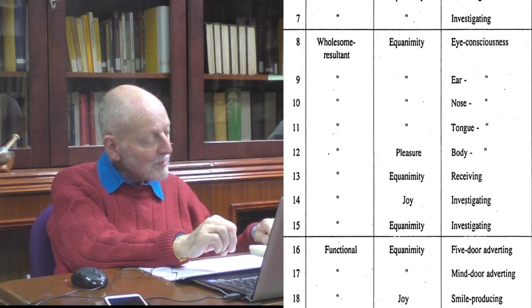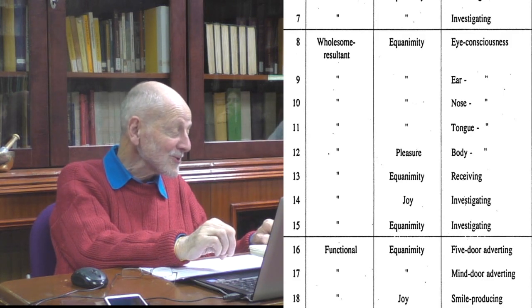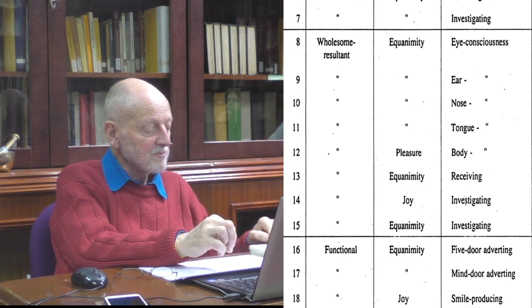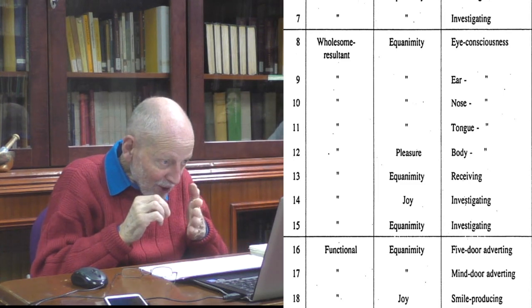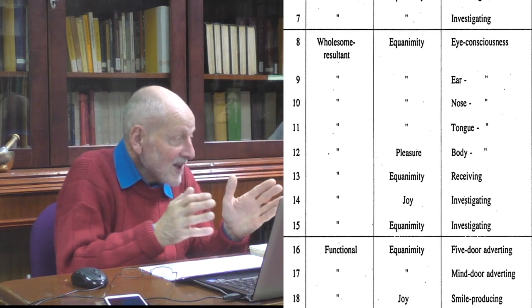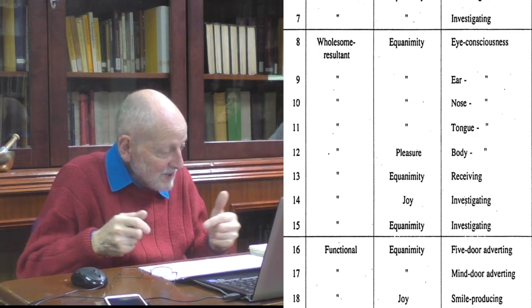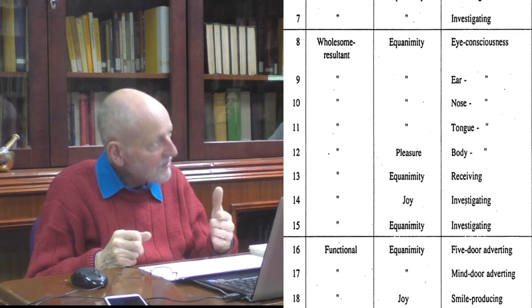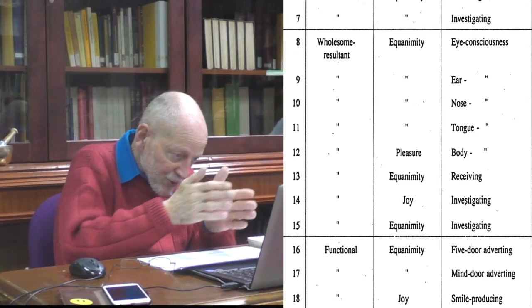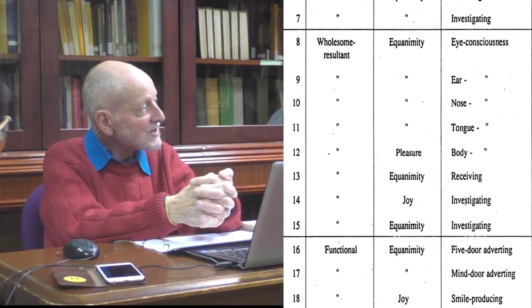All of the arahant's thoughts are kriya. From the time the Buddha became enlightened at the age of 35, he would have produced no more kamma. So what arose in his mind were kriya, not creating more kamma. In numbers 16 and 17, you can only have an indifferent feeling, because the thought moment that turns towards the sense door is not going to be either painful or pleasurable — it's purely functional, directing attention towards one specific sense door.